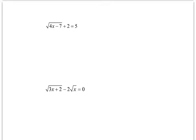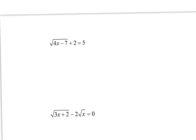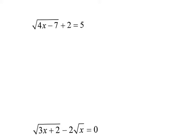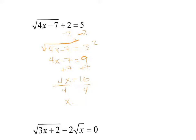Now the more complicated ones — I have more than just an x inside the root. I want to get the root by itself, so I move the 2 over. I have the square root of 4x minus 7 equals 3. Since there's no index number, this is the square root, so I square both sides. The square root and the square cancel, giving 4x minus 7 equals 9. I add 7: 4x equals 16, divide by 4, and x equals 4.